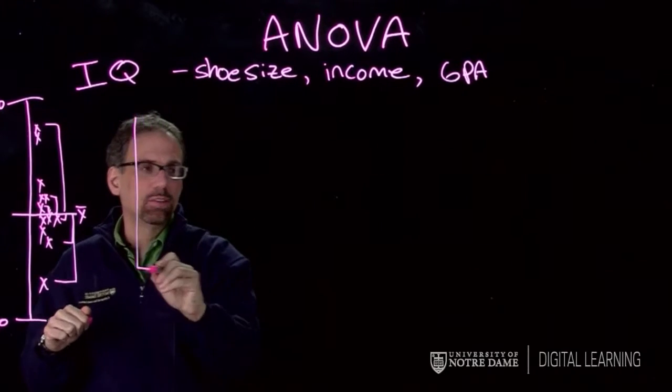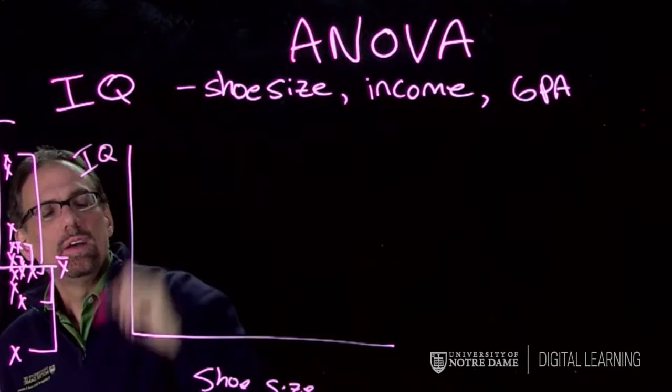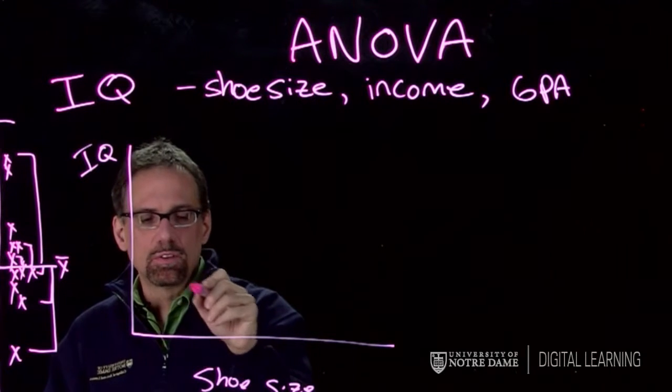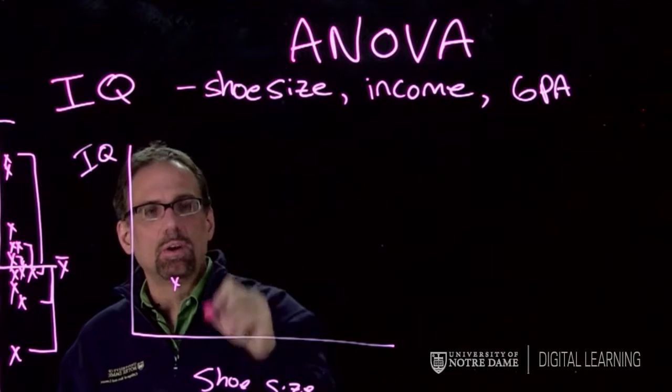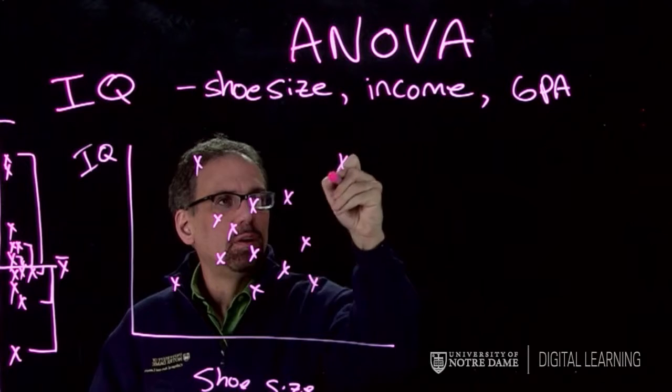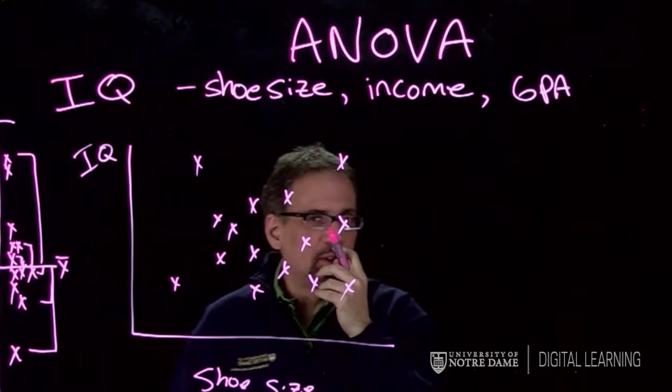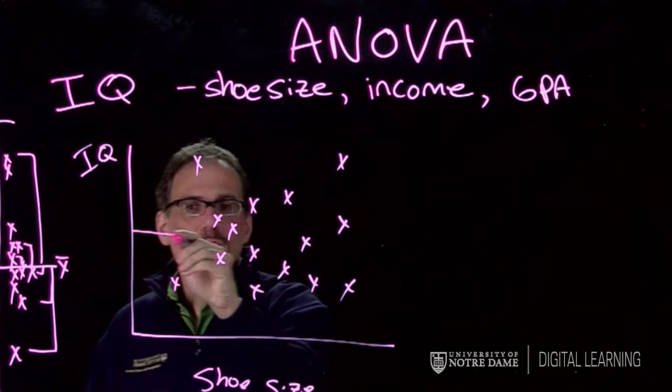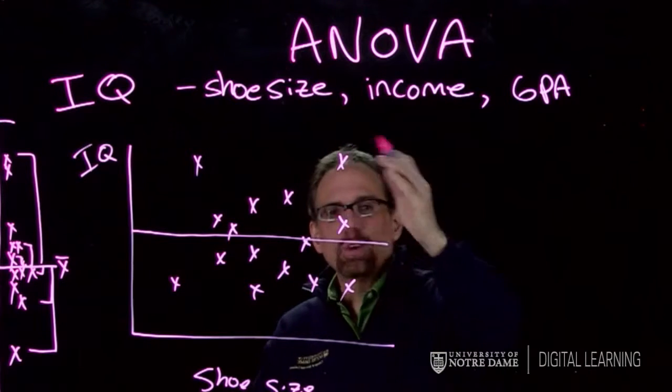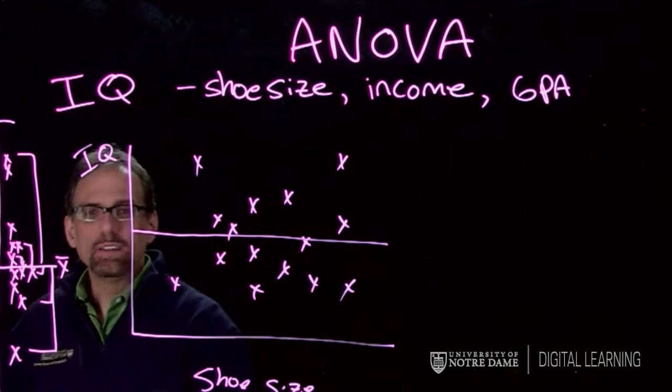So let's take the shoe size one. So here's, supposing this is people's shoe size down here, and this is their IQ up here. So I ask each person, what's your IQ? Or give them an IQ test. And then I find out what their shoe size is, and I plot it. So I have, you know, this person has a small shoe size and a low IQ, and then this person has a small shoe size and a large IQ, and so on. And so I have all these data points of these people. And it just looks like a random scatter of points, because there's not any relationship. Shoe size doesn't really predict IQ.